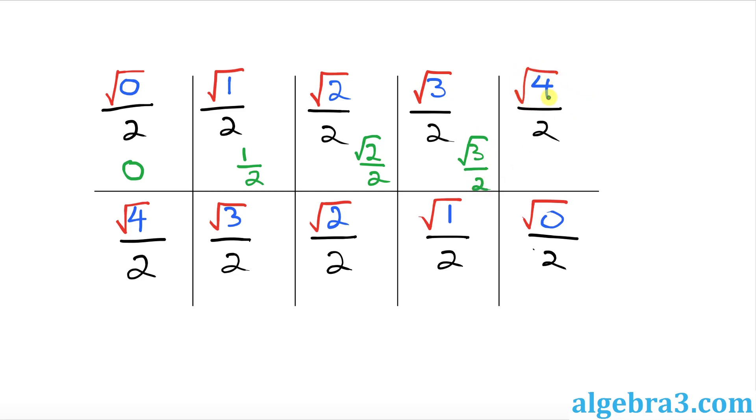Here, square root of 4 is 2, and 2 divided by 2 is simply 1. Now we do the same thing on this side. When we simplify: this becomes 0, this becomes 1 over 2, this is square root of 2 over 2, this is square root of 3 over 2, and this is simply 1.